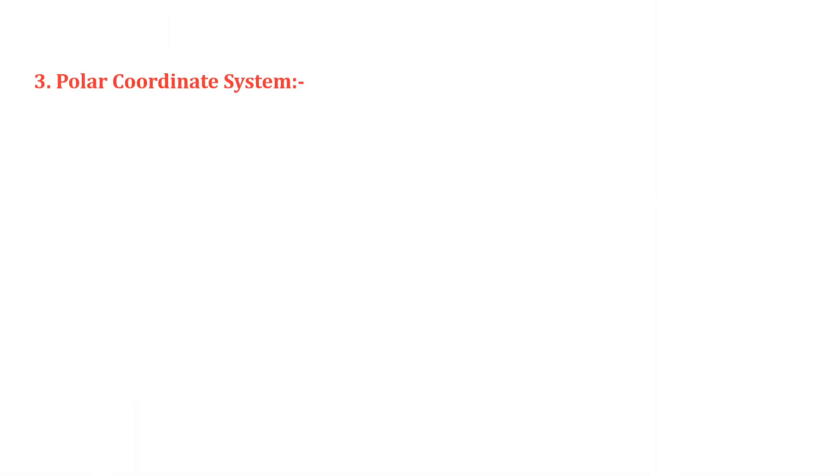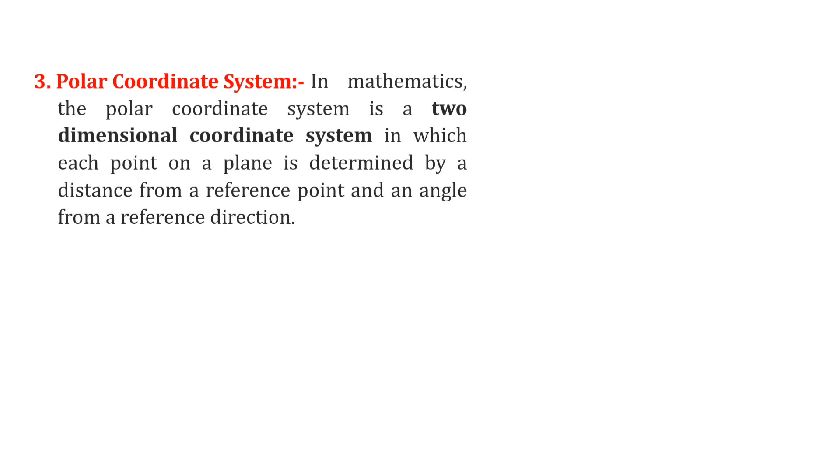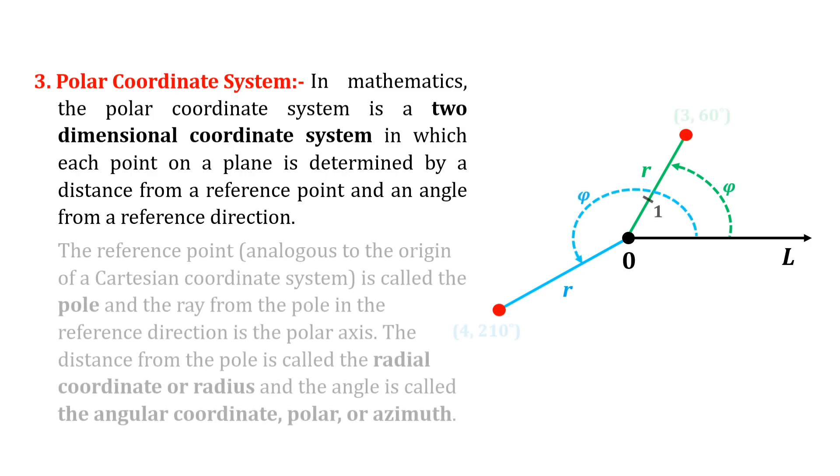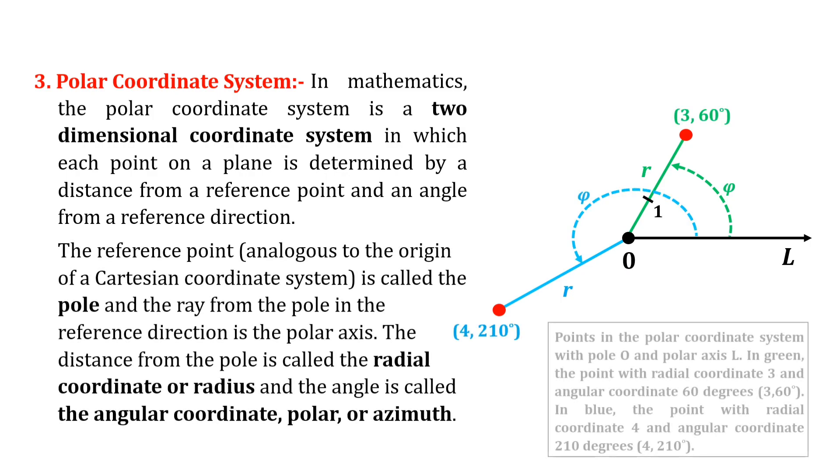Number three: polar coordinate system. The polar coordinate system is a two-dimensional coordinate system in which each point on a plane is determined by a distance from a reference point and an angle from a reference direction. The reference point is called the pole.